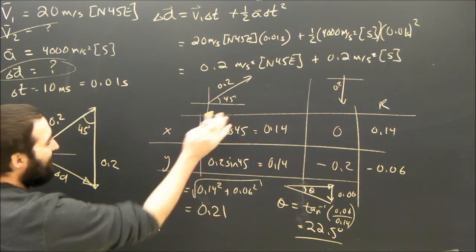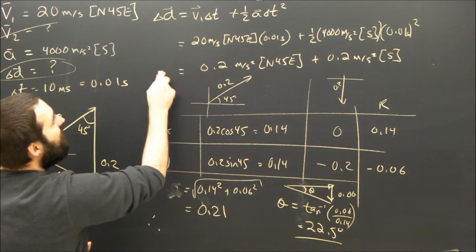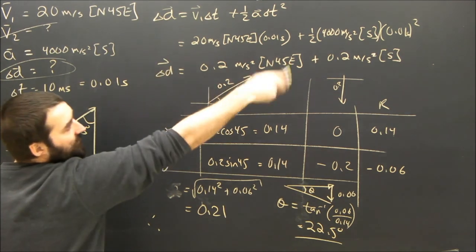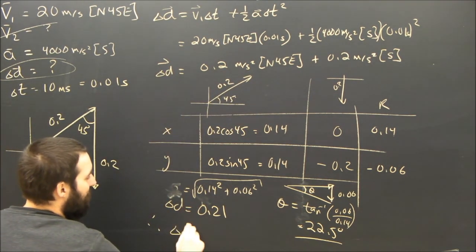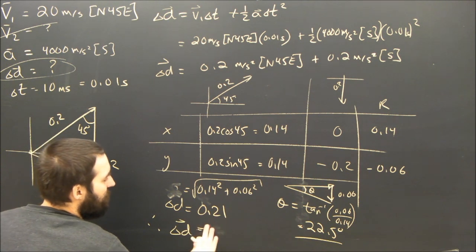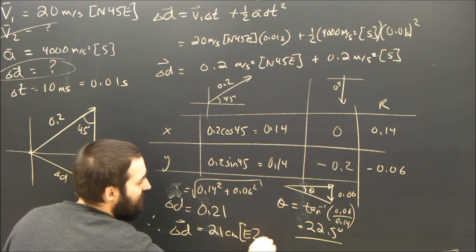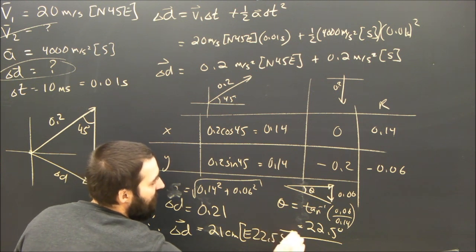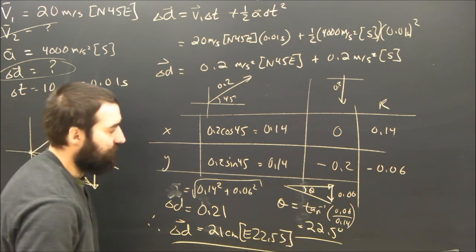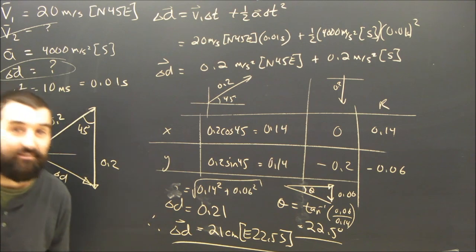Therefore, what are we finding here? We're finding the displacement. The result of all this is a displacement. So the displacement, therefore, of the electron is equal to 21 centimeters east 22.5 south. And that's the answer to part A.